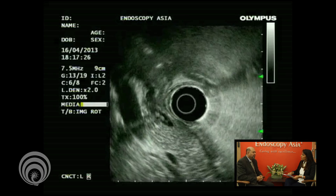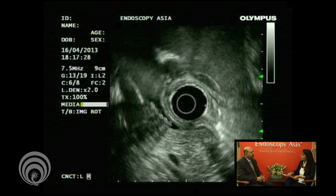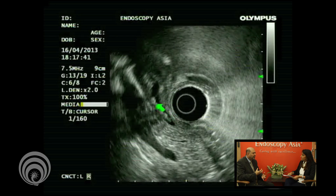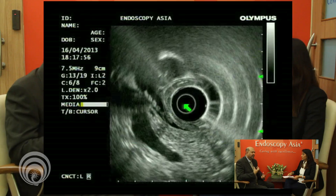Doctor, what is the most effective method of detection of bile duct stones? Usually, patients who have developed stones in the bile duct — the stones are present in the gallbladder, and these gallbladder stones slip into the bile duct and cause jaundice.